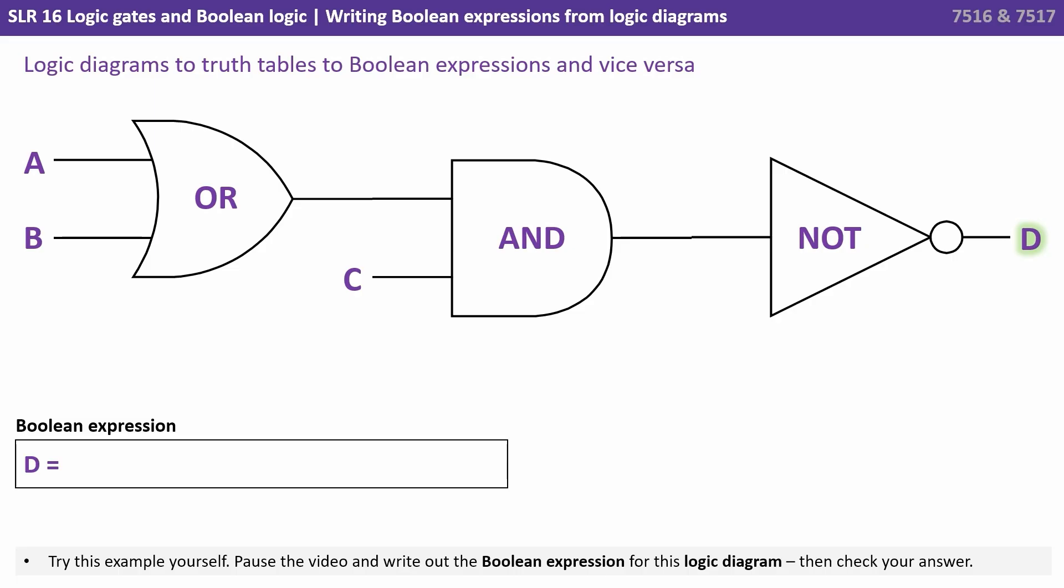So we have an output with D so we've got D equals. We're going to see that whatever the previous part of the logic gate works out, we're then going to reverse it with a NOT. So we're drawing the line there for NOT.